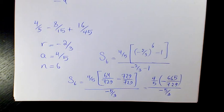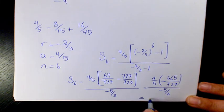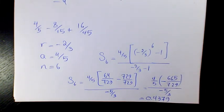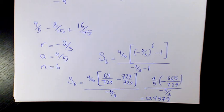Calculating this gives approximately 0.4379 rounded to four decimal places. That's basically how you find the sum of a geometric sequence or geometric series. I hope you enjoyed this video — please leave a comment if you have any questions, don't forget to subscribe, thank you for watching and have a great day.